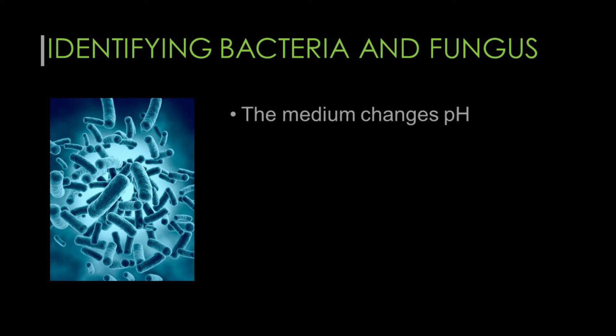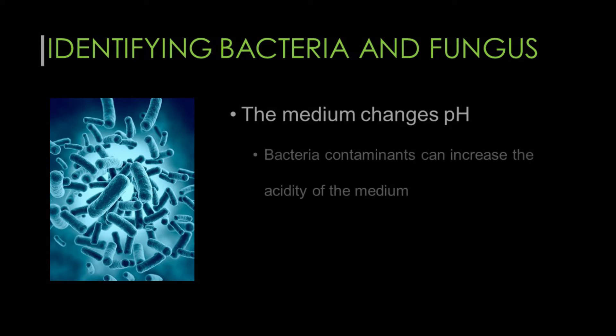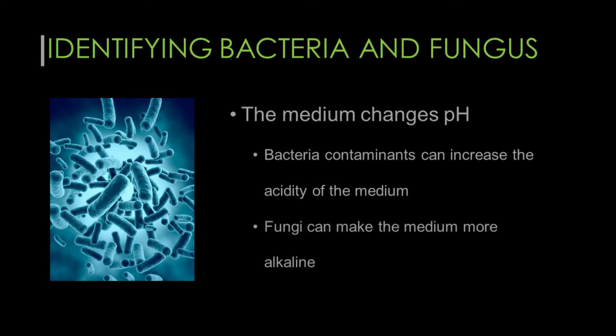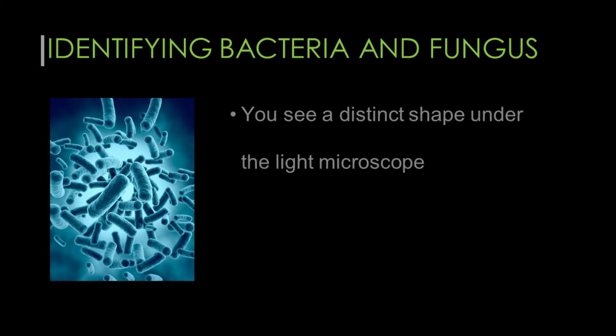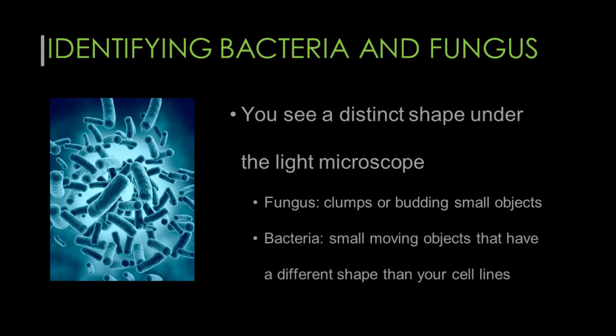The medium also changes pH. Bacterial contaminants can increase the acidity of the medium, whereas fungi might make the medium more alkaline. You can also see a distinct shape under the light microscope. With fungal contamination, there might be clumps or small budding objects, whereas with bacterial contamination, you're likely to see small moving objects that have a different shape than your cell lines.